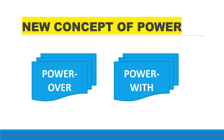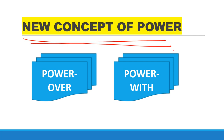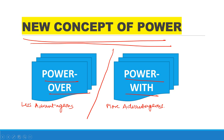Moving to the next topic, that is the new concept of power. According to Follett, power is the ability to make things happen, to be a causal agent, and to initiate change. Follett was the one who distinguished between the concepts of power over and power with. Power over is less advantageous than power with, because power over means asserting oneself and forcing another to do one's will.